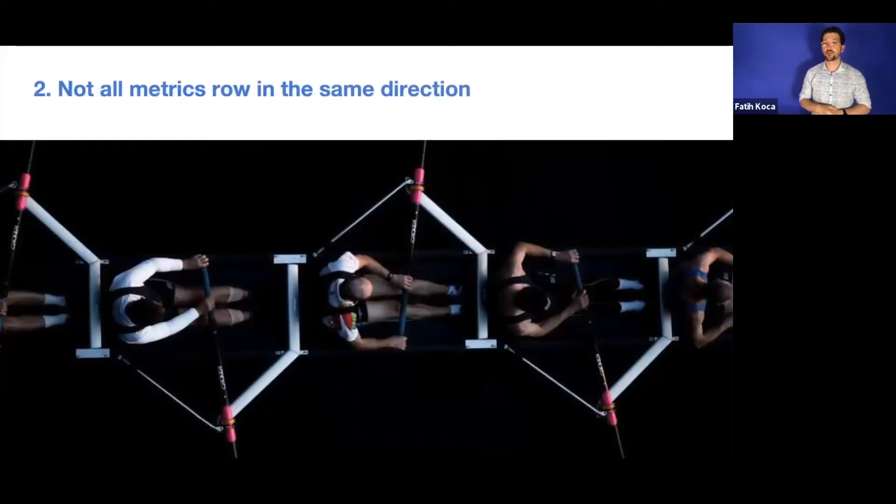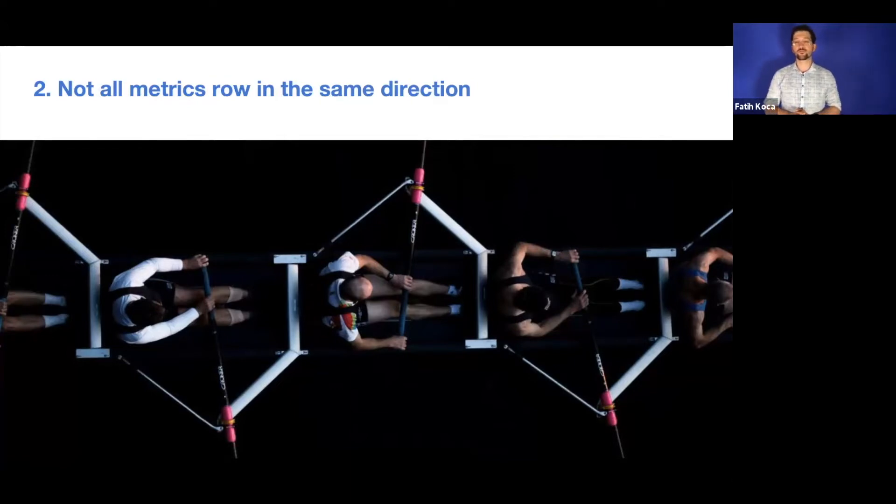Next, we have lots of metrics, but not all metrics roll in the same direction. Our conversion might go up and retention might go down. What are we going to do? What KPI are we going to be basing our decision on? Conversion or retention?